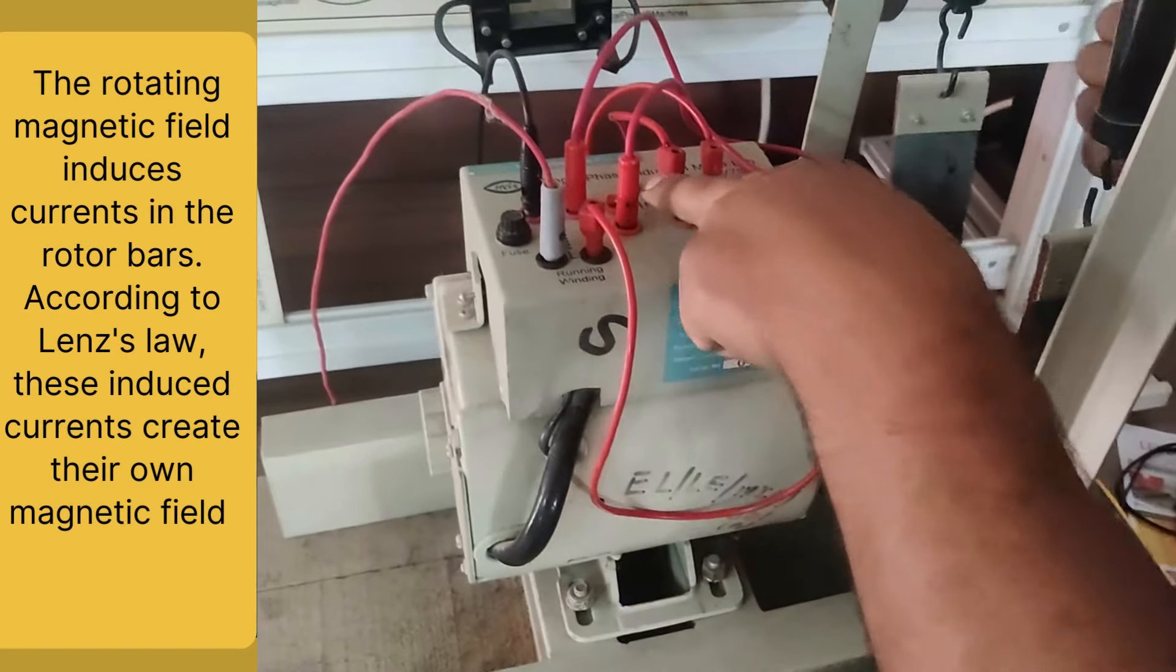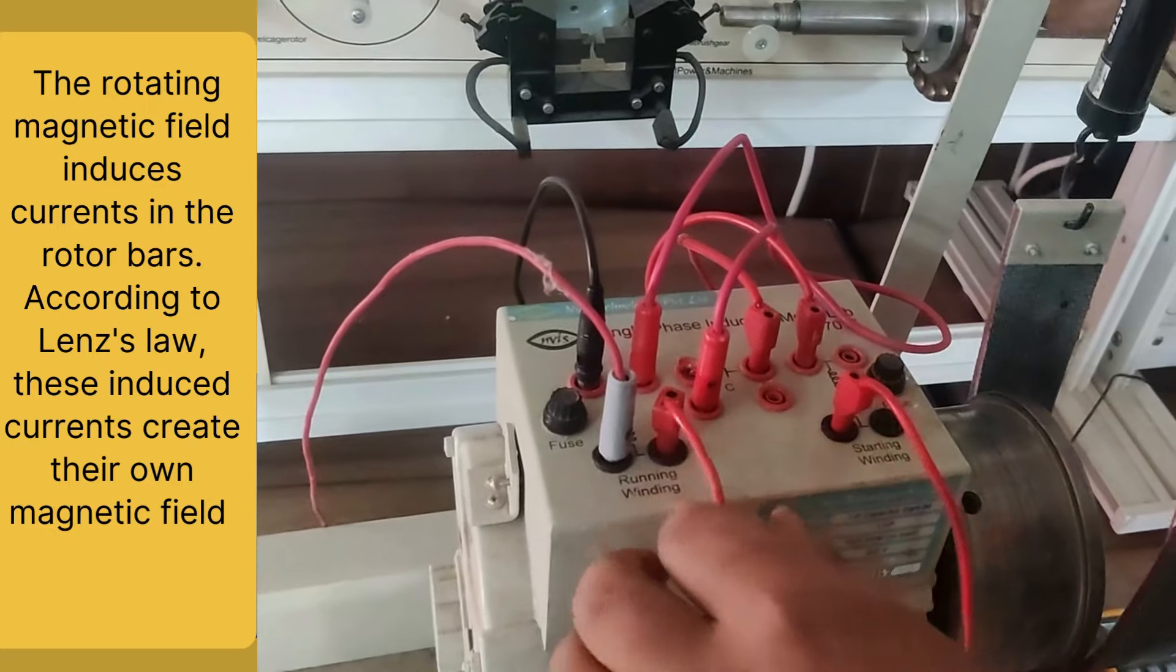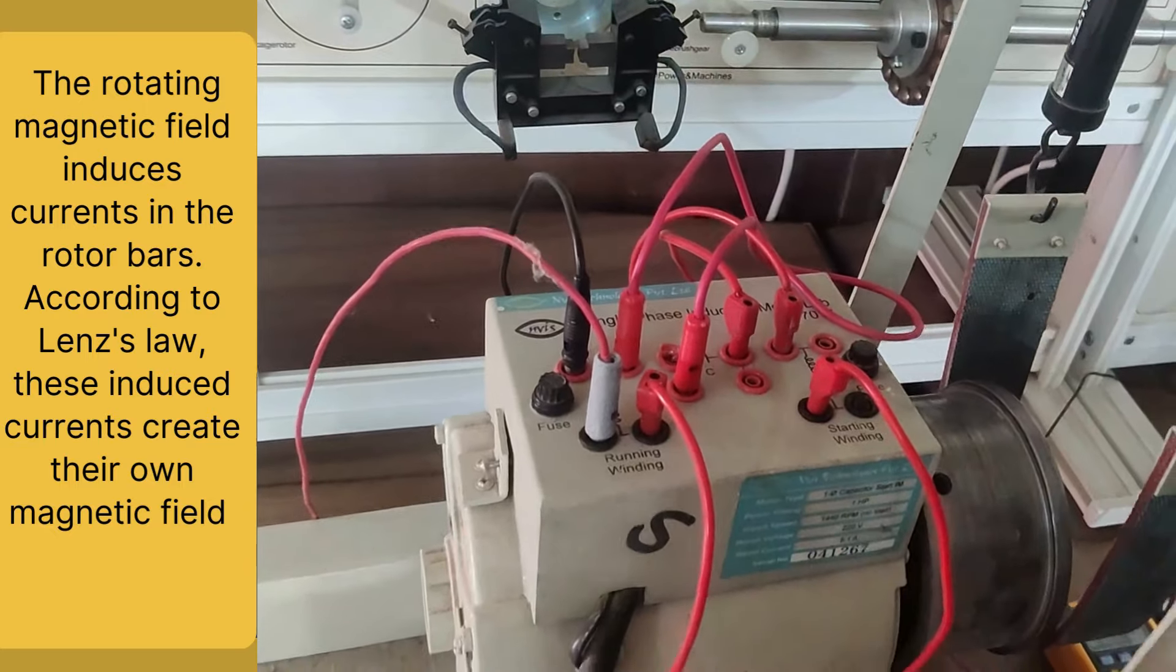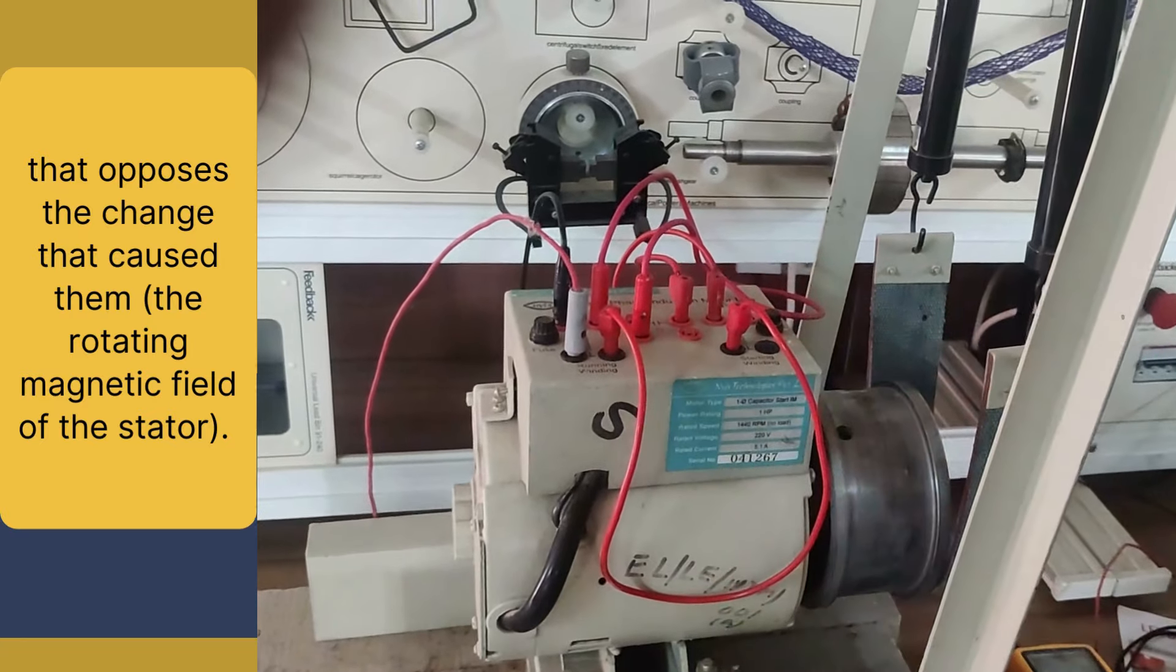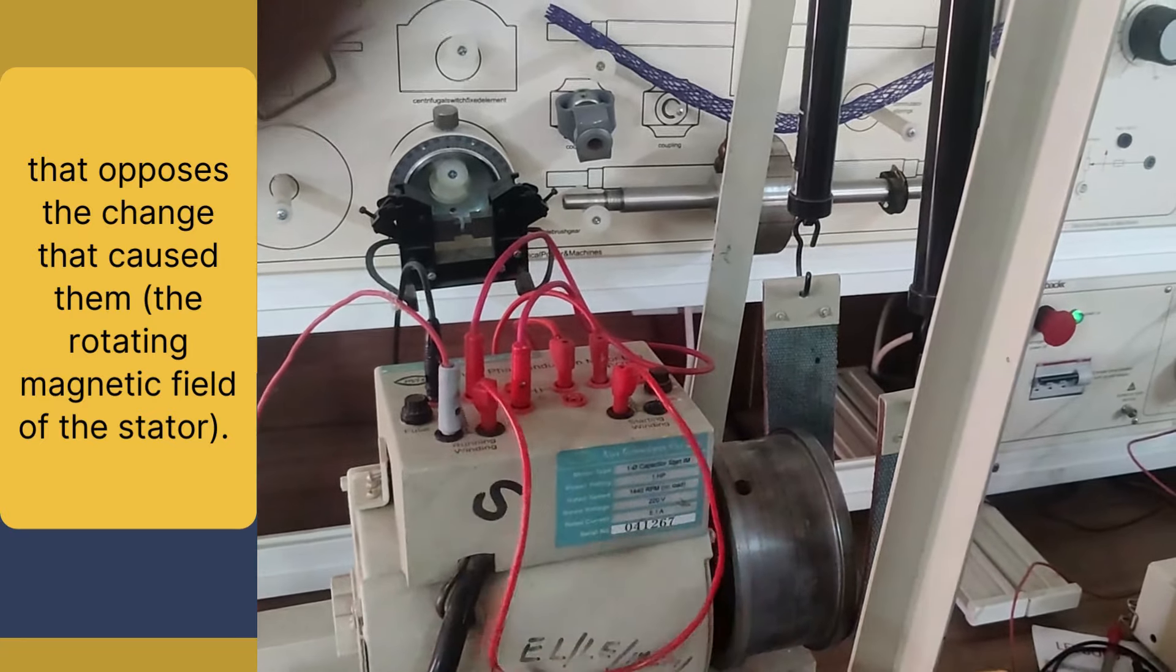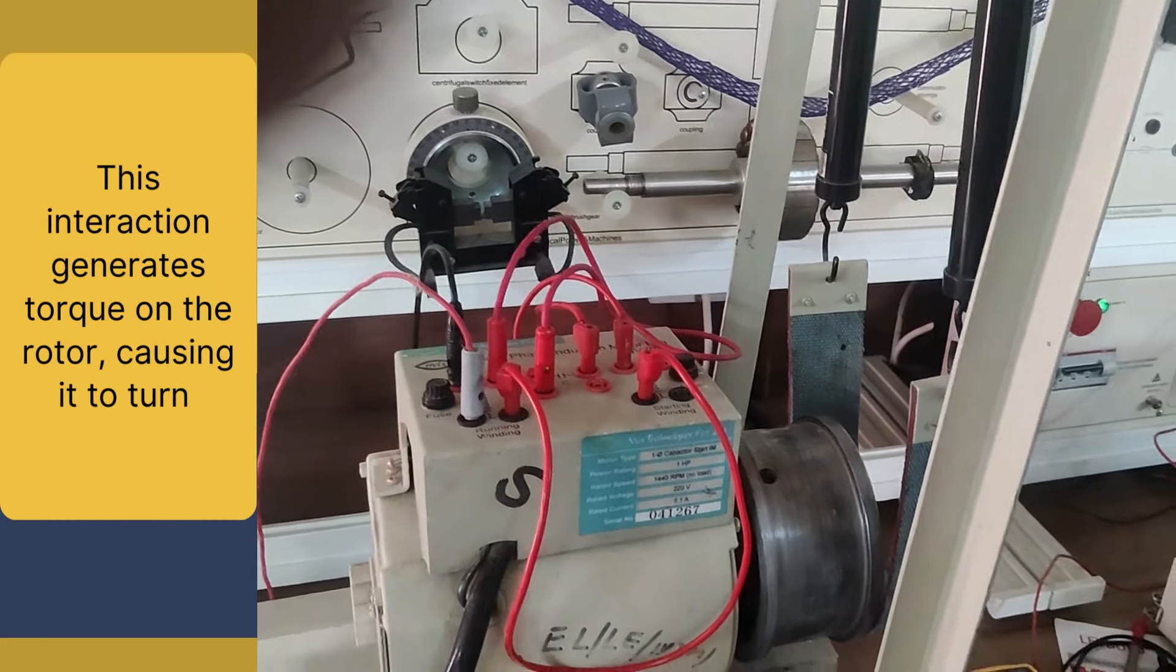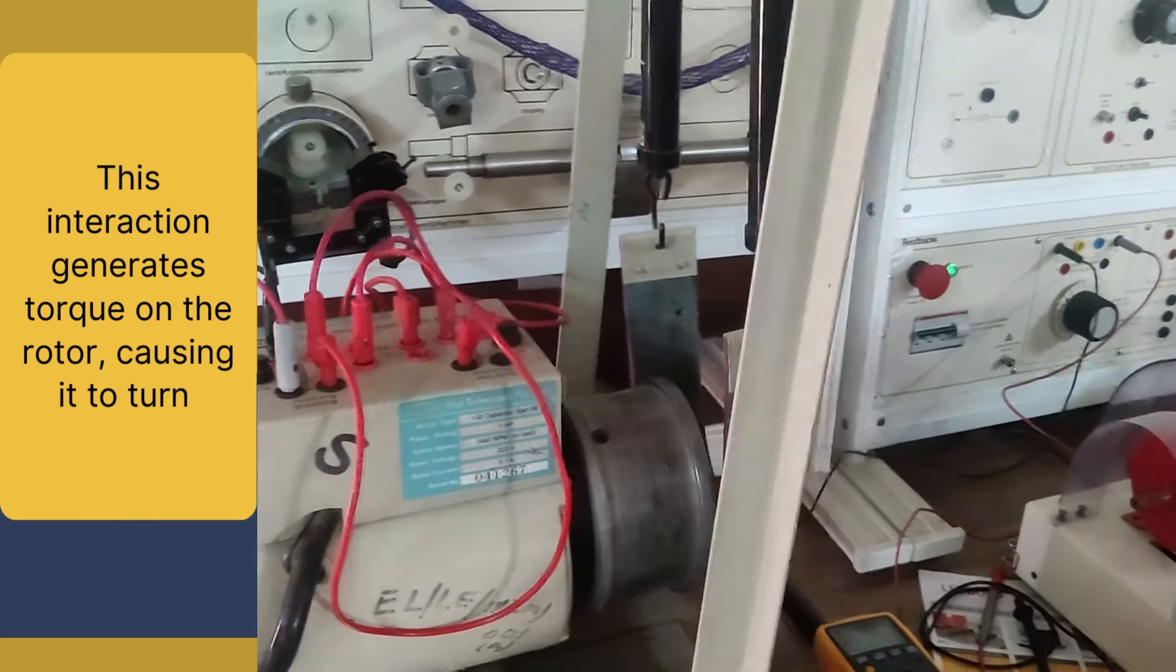So the rotating magnetic field induces currents in the rotor bars. As we know, according to Lenz's law, these induced currents create their own magnetic field that opposes the change that causes them—the rotating magnetic field of the stator. This interaction generates torque on the rotor, causing it to turn.